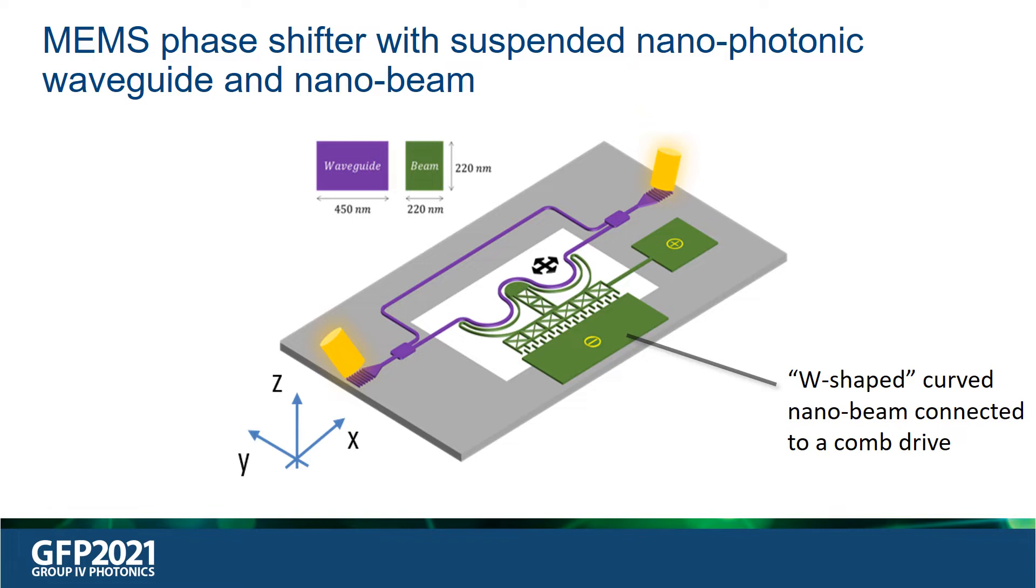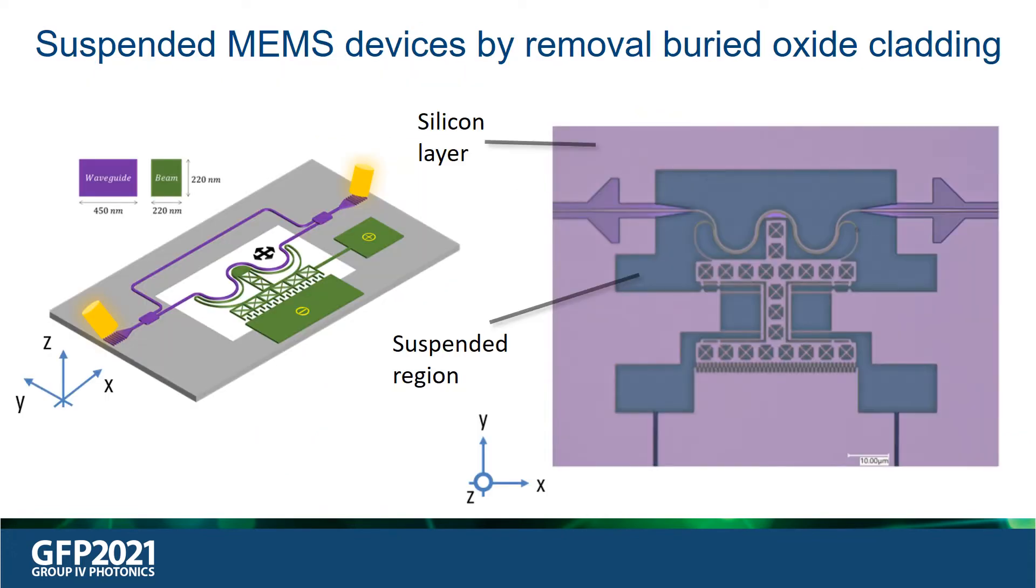A thin nanobeam of width and thickness 220 nm follows the curvature of the waveguide. The nanobeam is attached to a low-stiffness comb drive. Supplying a bias voltage to the comb drive results in in-plane motion of the nanobeam. That is, the nanobeam is pulled away from the waveguide. On the right is a microscope image of the optical phase shifting arm of the MZI. We can see the suspended W-shaped waveguide, nanobeam, and the comb drive.